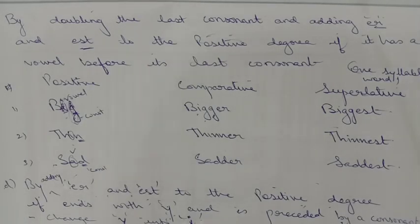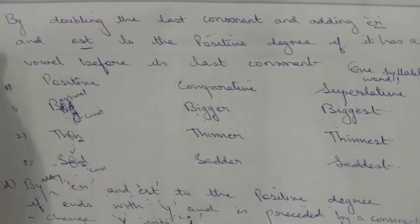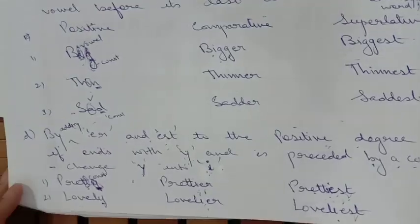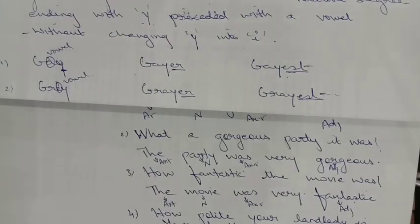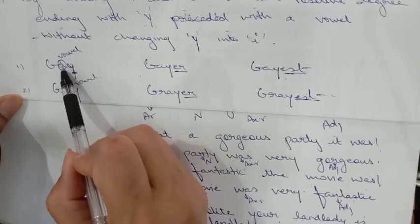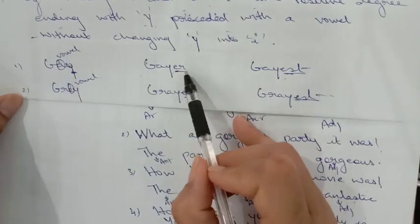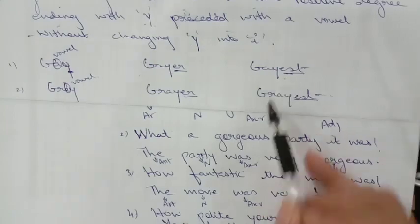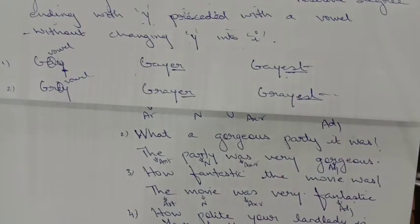If Y is preceded by a consonant, you change Y into I and then add E-R and E-S-T for the comparative and superlative. But if Y is preceded by a vowel, you need not change Y into I — just simply add E-R and E-S-T. For example, 'gay': it ends with Y but before it is a vowel, so just add E-R and E-S-T without changing Y to I.